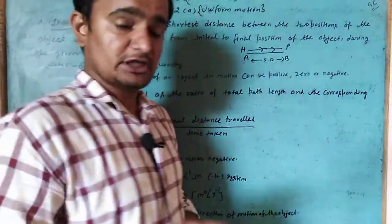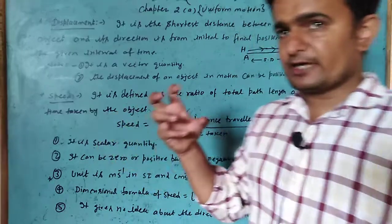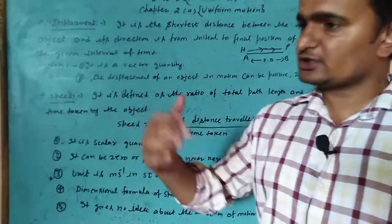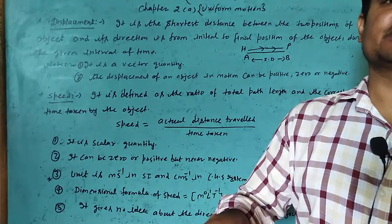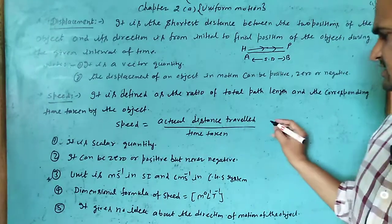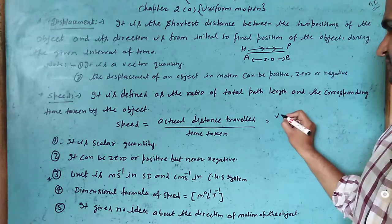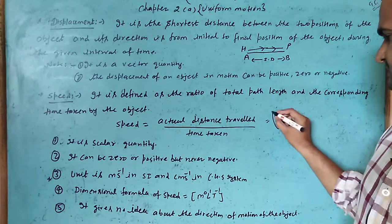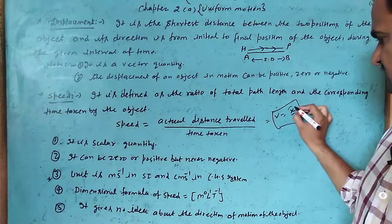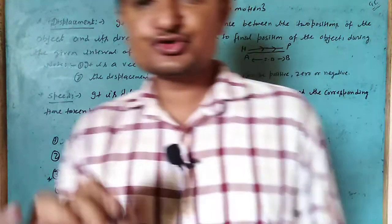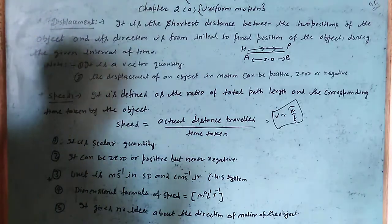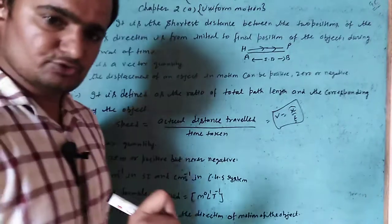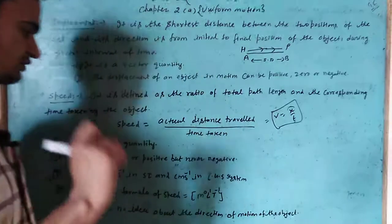By definition, speed is the ratio of total path length to the corresponding time taken. It is the ratio of the actual distance travelled by the object to the given time taken. Now, some important points to remember: first, speed is a scalar quantity, meaning speed has only magnitude but no direction.